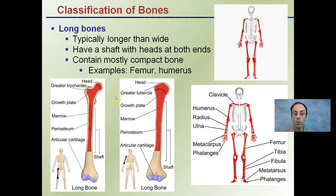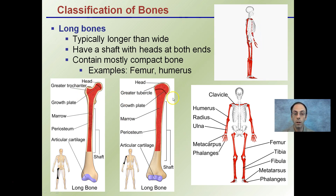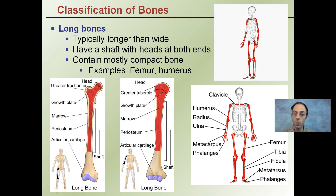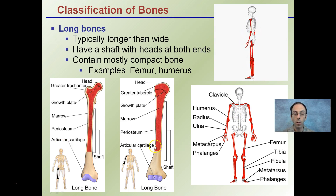We see a lot of similarities between these two long bones. The head regions, though, are different between the two, and that results from the joints that each attaches to. So we should be familiar with where the humerus and the femur are located, despite them looking very similar.